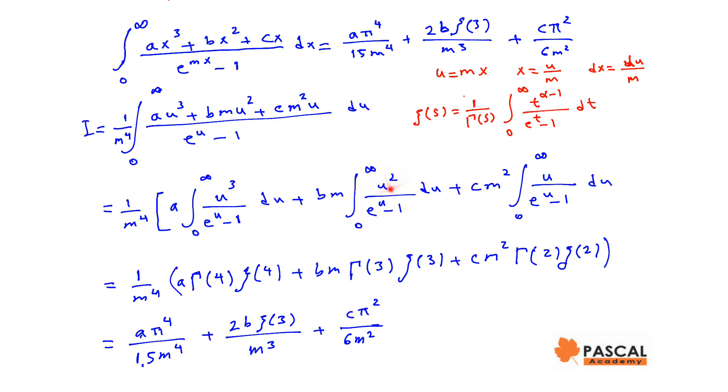I can be written as (1/M⁴) times [AΓ(4)ζ(4) + BMΓ(3)ζ(3) + CM²Γ(2)ζ(2)]. Gamma of 4 is 3 factorial, zeta of 4 is π⁴/90.